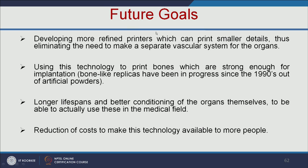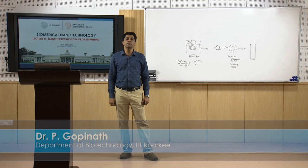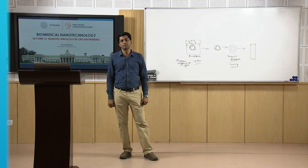Future goals include developing more refined printers that can print even smaller details — which will eliminate the need for a separate vascular system and increase the lifespan of artificially printed organs — and reducing the cost of this technology so it is available to more people. As a summary: in this lecture we have learnt what is organ printing, what are the types of 3D printing, the various 3D bioprinting approaches, the organ decellularization approach, and the role of nanotechnology in organ printing. I will end my lecture here. I thank you all for listening, and I will see you in another interesting lecture.